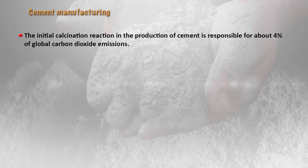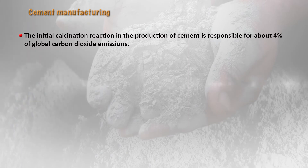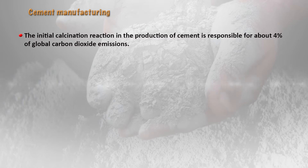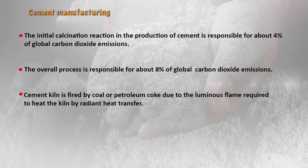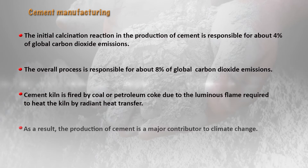The initial calcination reaction in the production of cement is responsible for about 4% of global carbon dioxide emissions. The overall process is responsible for 8% of global CO2 emissions, contributing to greenhouse gases and global warming. The cement kiln is fired by coal or petroleum coke due to the radiant heat required. As a result, the production of cement is a major contributor to climate change.